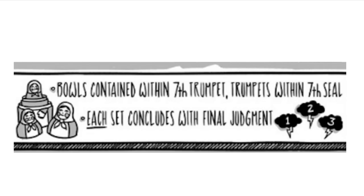The bowls are contained within the seventh trumpet, and the trumpets are contained within the seals — they unfold from each other. Each of them concludes with a final judgment. Obviously there aren't three final judgments; there's one final judgment, and so these three final judgments are all the same judgment. It's not unfolding events so much as here's one perspective of what's taking place, here's another perspective, and here's a final perspective. Think of them like nesting dolls — they're kind of slowly un-nesting.